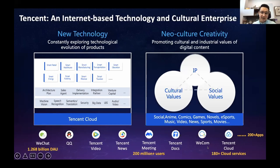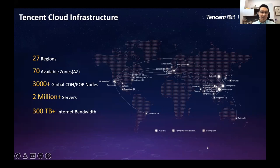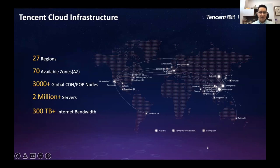We support not only SaaS but also PaaS services to our business partners based on the Tencent Cloud. The Tencent Cloud infrastructure, at a high level, now covers 27 regions globally and 70 availability zones globally. We have more than 3,000 global servers already to support the applications and our business partners. The internet bandwidth is also growing very fast — it's more than 300 TB internet bandwidth at Tencent, supporting lots of content and gaming services.